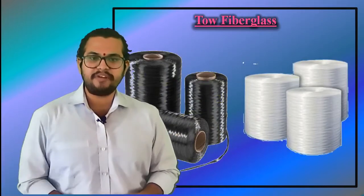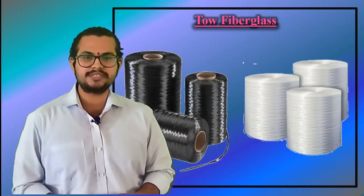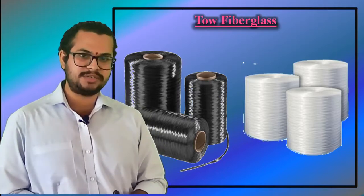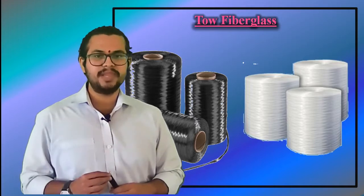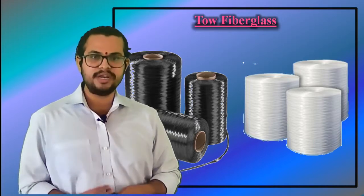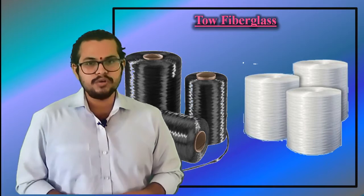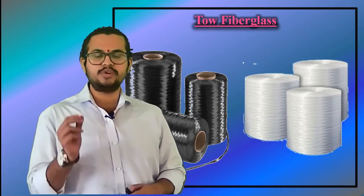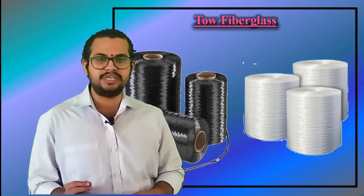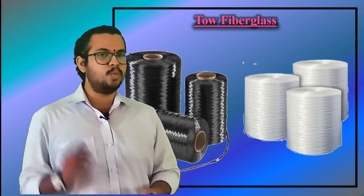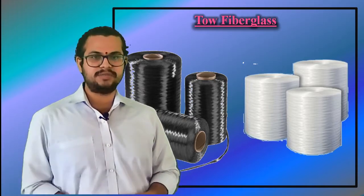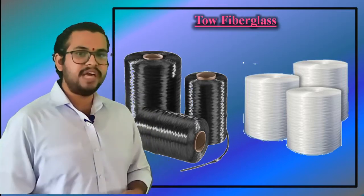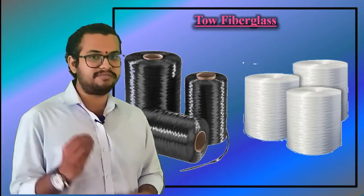In the artificial fiber and composite industries, a tow is an untwisted bundle of continuous filaments, in particular of acrylic, carbon fibers, or viscose rayon. Tows are designated either by their total tex — a unit of weight used to measure the density of yarns, equal to one gram per thousand meters — or by the number of fibers they contain. For example, a 12K tow contains 12,000 fibers.